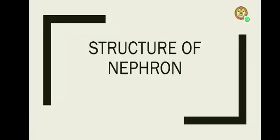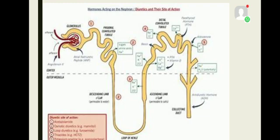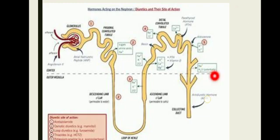Next we are going to see the structure of the nephron. The nephron is present in the renal cortex — half of the nephron is present in the cortex region and the remaining half, including the collecting tubule, is present in the medulla region. More than one million nephrons are present in each kidney. It is otherwise called the uriniferous tubule.